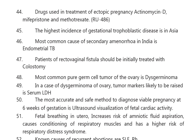The most common cause of secondary amenorrhea in India is endometrial TB. Patients of recto-vaginal fistula should be initially treated with colostomy. The most common pure germ cell tumor of the ovary is dysgerminoma.